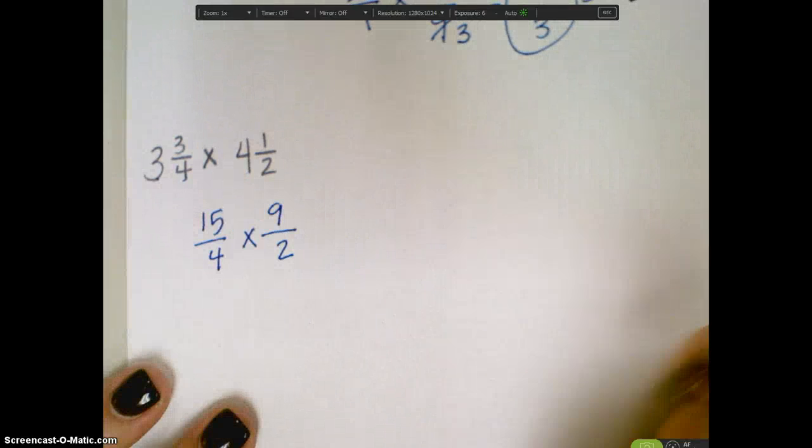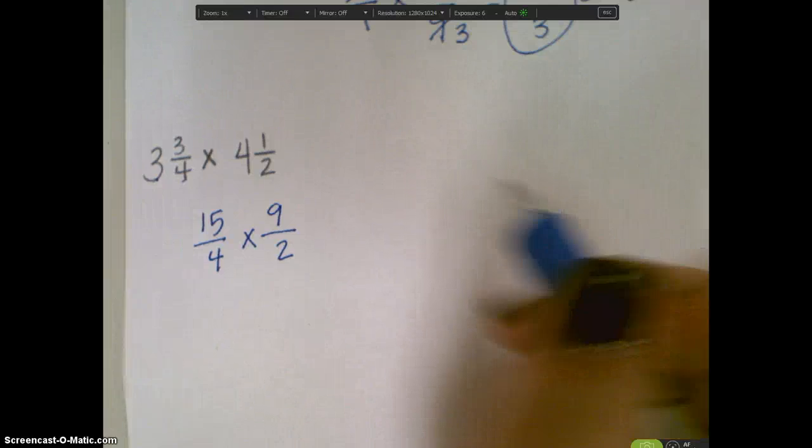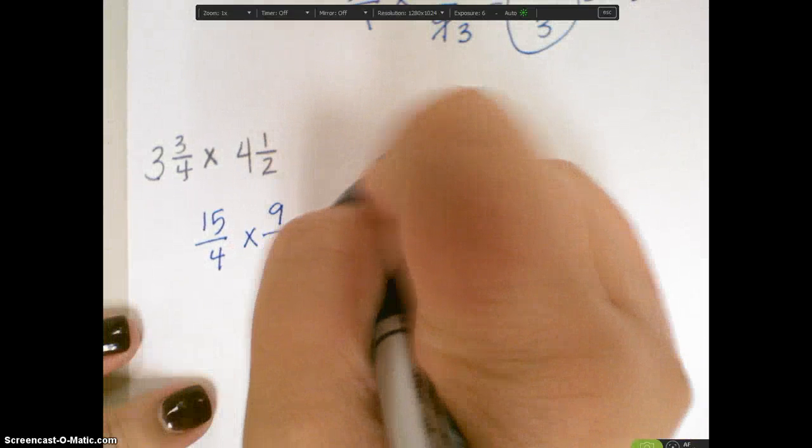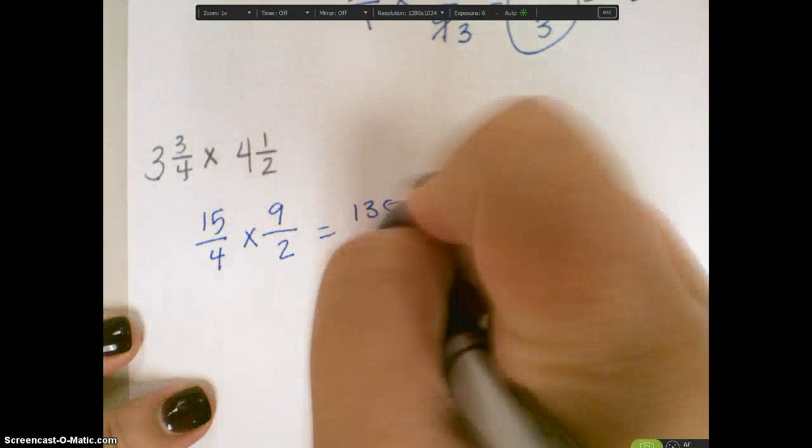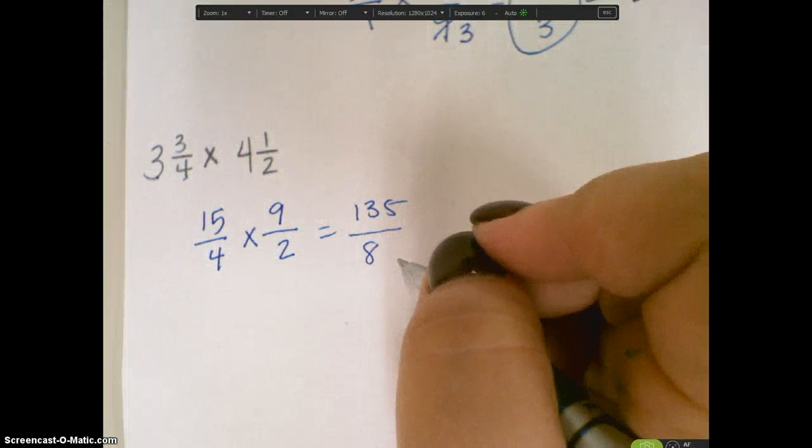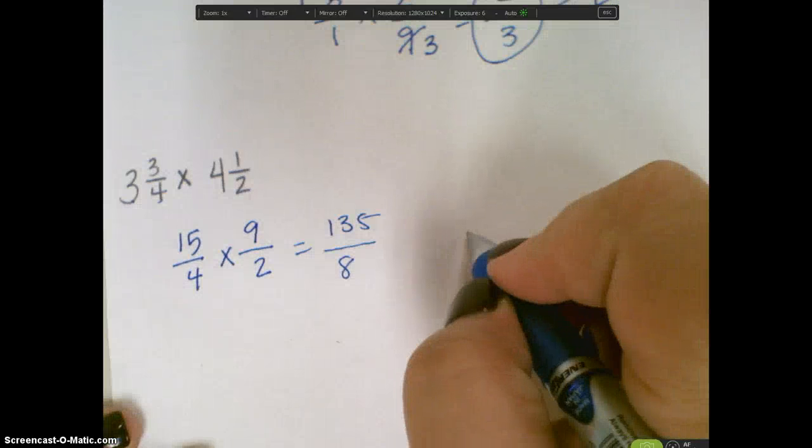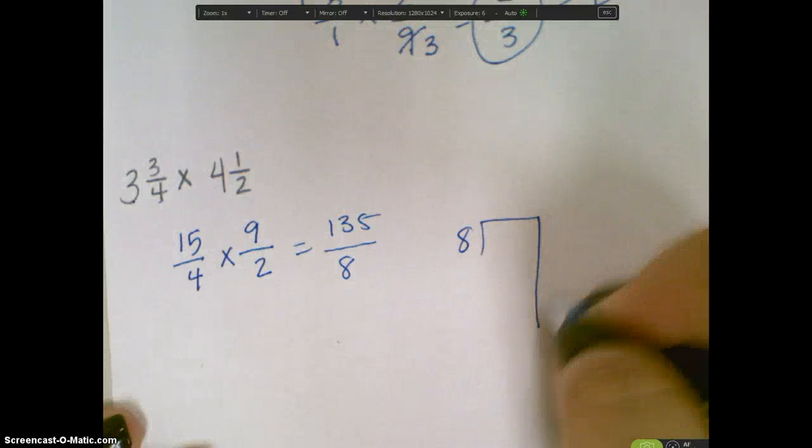This is where I'm going to now start my multiplication like normal. So I'm going to do 15 times 9 which is 135, and 4 times 2 which is 8, which is going to leave me with an improper fraction. So because this is an improper fraction I need to turn it into a mixed number. I'm going to do that by dividing 8 into 135.